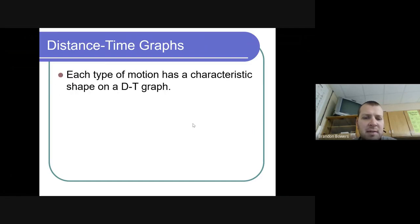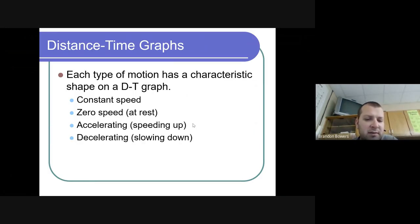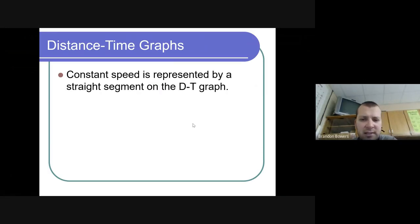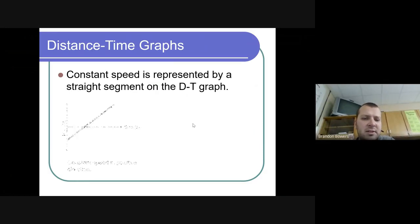Each type of motion has a characteristic shape on a distance-time graph. We're going to look at constant speed, zero speed, and accelerating and decelerating. Constant speed is represented by a straight segment. If it's going up, we're in the positive direction.